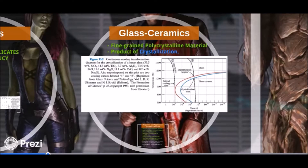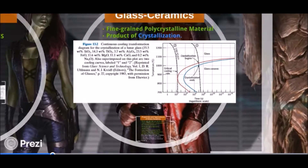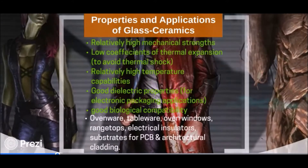Glass ceramics are fine-grained polycrystalline material because they are a product of crystallization — a process that transforms non-crystalline into crystalline. Here is a diagram of the glass crystallization process showing time versus temperature. They are often used as ovenware, tableware, oven windows, and range tops because they have relatively high temperature capabilities and low coefficients of thermal expansion, which is good to avoid thermal shock.